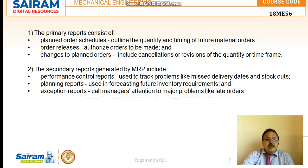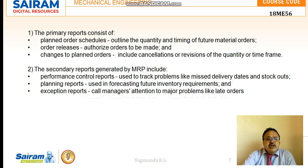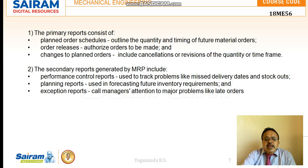Order releases: once planned orders are ready, they are sent for authorization. After the signature is obtained from the authority, the order is released to vendors. Changes in planned orders include any cancellation of orders, revision of quantities to be purchased, or changes to the time frame for purchasing. Secondary reports include performance control reports, tracking problems like missed delivery dates or stockouts from vendors.